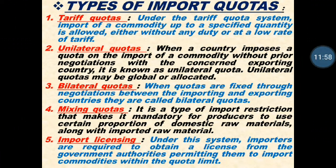Next is import licensing. From the word 'licensing' we understand we have to take some type of permission. Import licensing means under this system importers are required to obtain a license from the government, authorizing them to import a commodity within the quota limit. Import licensing is generally applicable for importers or producers dealing in products like tobacco, explosive products, and chemical products.